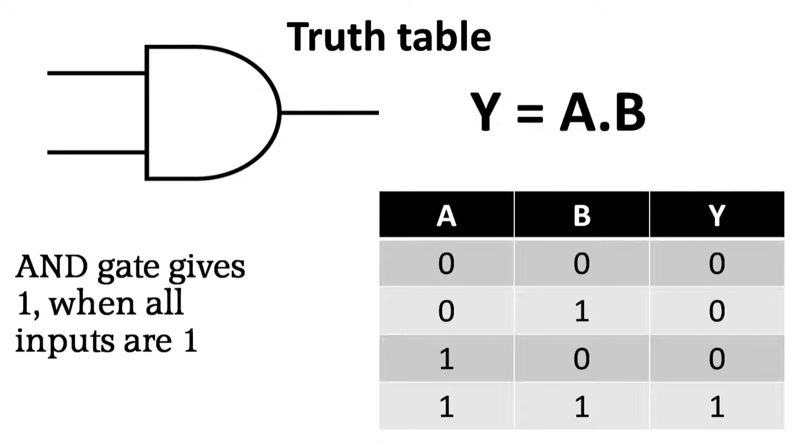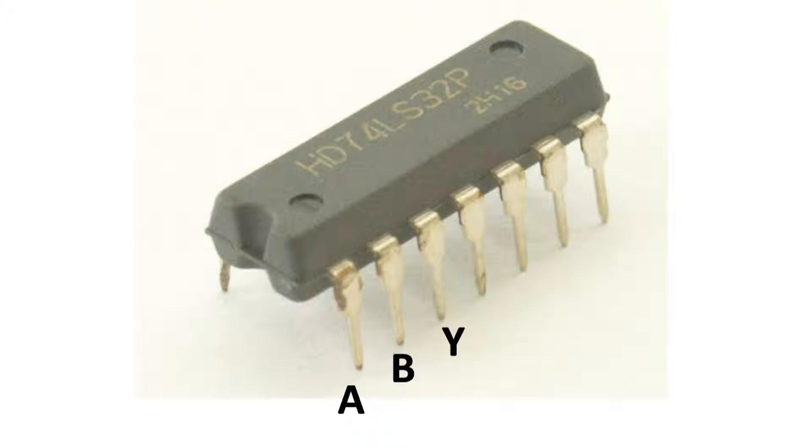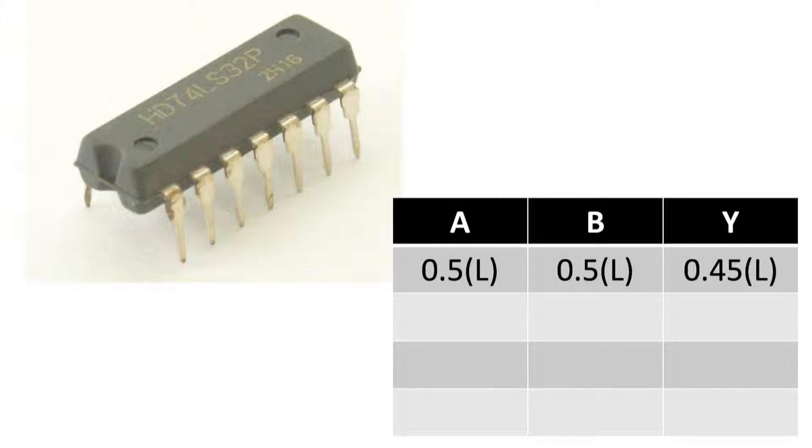We can make truth tables two ways. First from function of the digital circuit - here output Y is equal to A and B. We know Y would be one only when all the inputs are one, that's why we could easily construct a truth table for AND gate. We can test a circuit by applying different inputs to construct its truth table. We are given a chip - in this pin 1 and pin 2 are inputs and pin 3 is the output. Which kind of gate does this chip have? Let's find out.